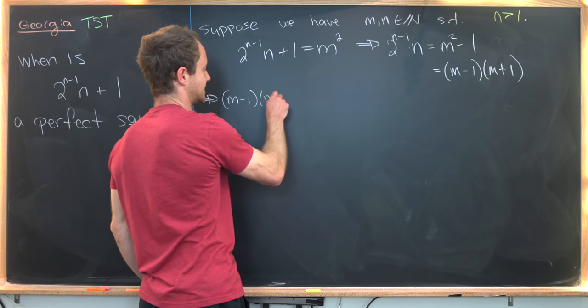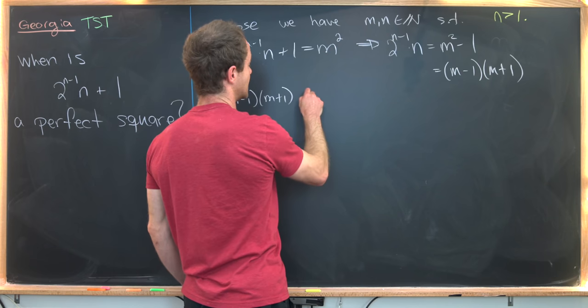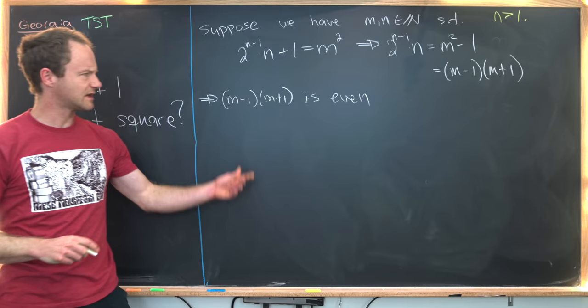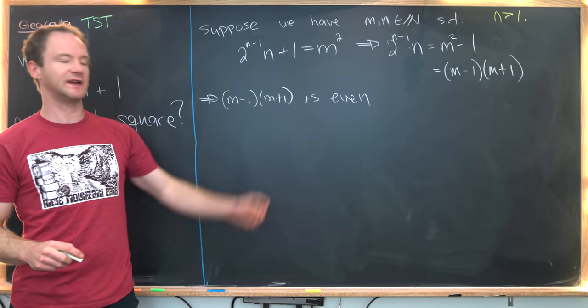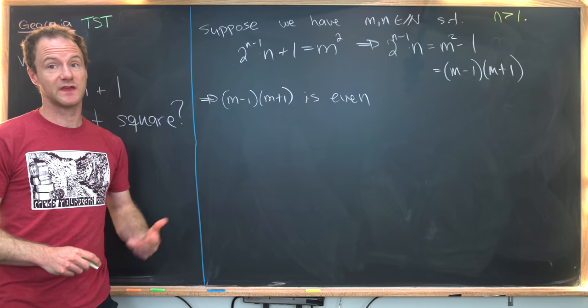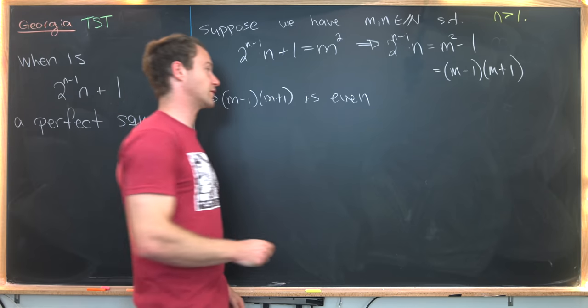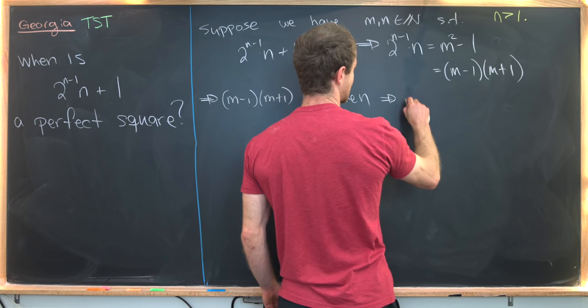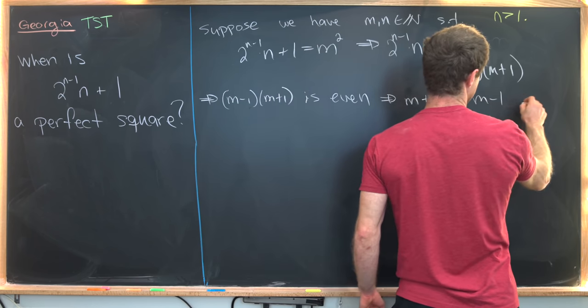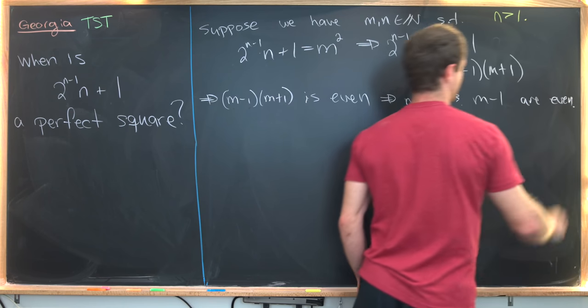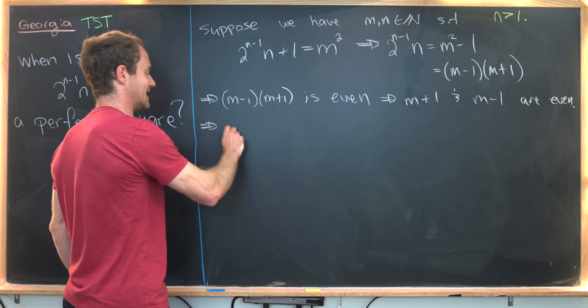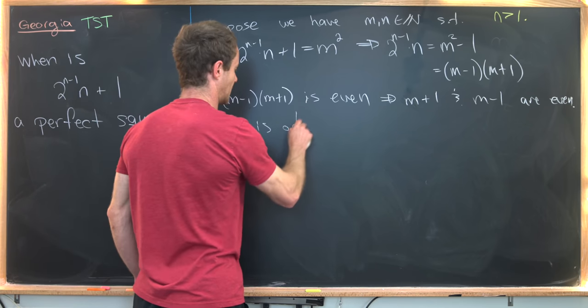(m-1) × (m+1) is even. But let's next notice that m-1 and m+1 are the same parity - they're either both even or they are both odd. So that tells us that m+1 and m-1 are even. But if m+1 and m-1 are even, then that means that m is odd.